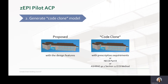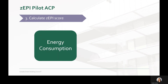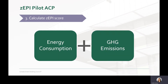For projects using NECB for local code, the NECB Part 8 reference building may be modeled in lieu of the code clone building. And for those using ASHRAE 90.1 for local code, the ASHRAE 90.1 Section 11 energy cost budget baseline building may be modeled instead. The third step is to calculate the ZEPI score for the proposed design. This is done using site energy consumption as a metric and using greenhouse gas emissions as the metric.